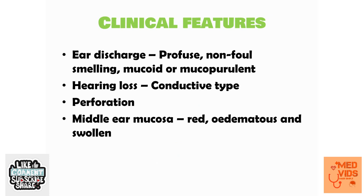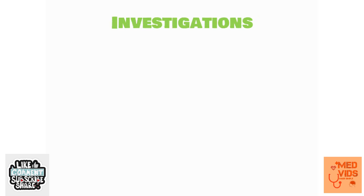To summarize the clinical features: ear discharge is profuse, non-foul-smelling, mucoid or mucopurulent; hearing loss is conductive; perforation is in pars tensa and is a central type; and middle ear mucosa will be red, edematous, and swollen.